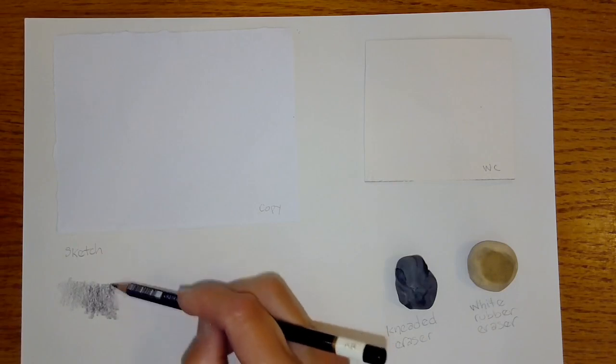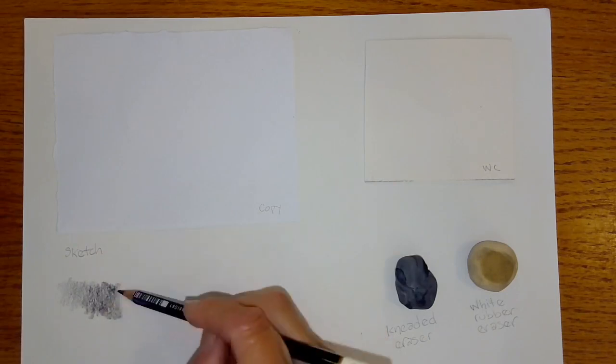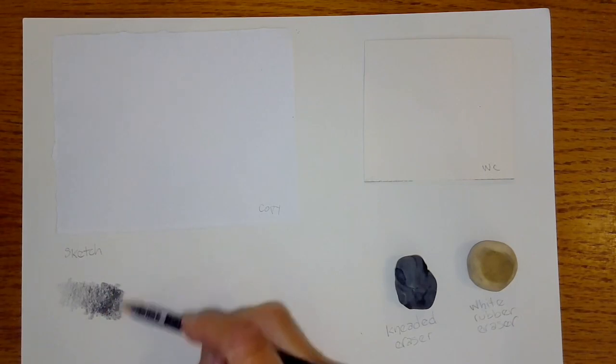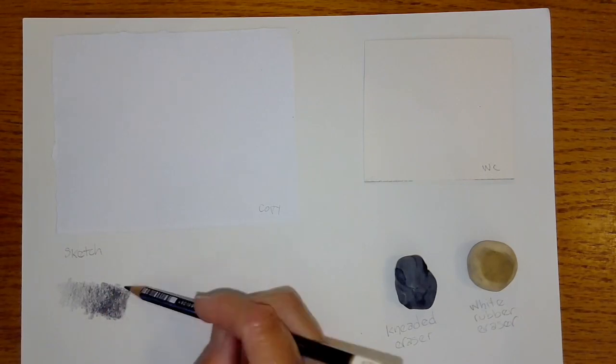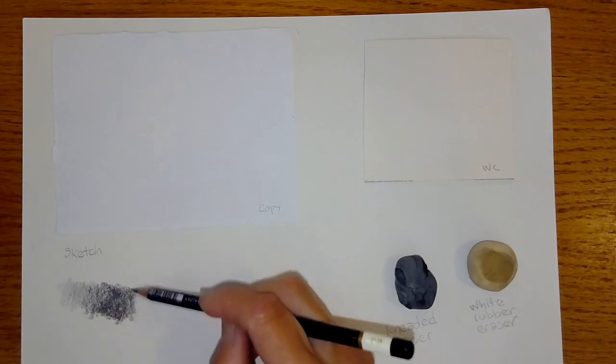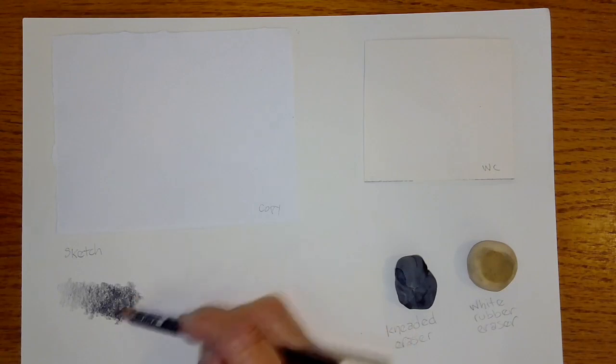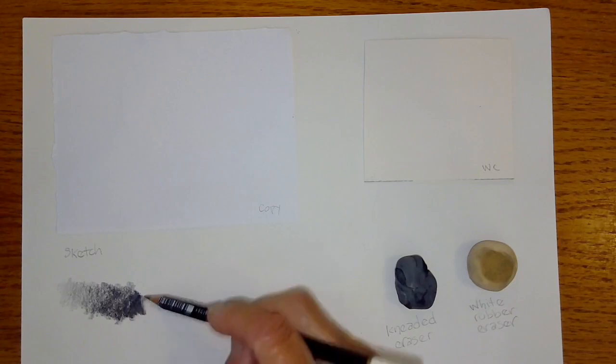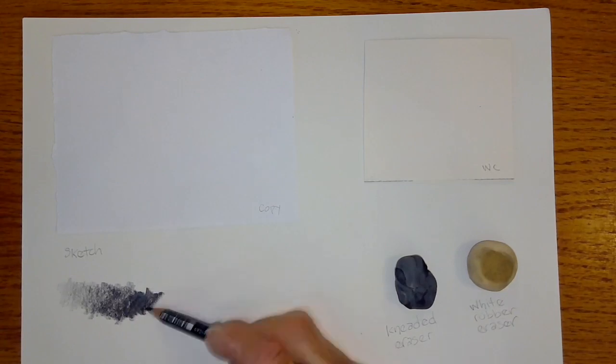This feels so nice, so much fun. Light pressure in the beginning, now I'm working into moderate pressure to gradually get the value a little darker, laying down more graphite on the page, and now I'm going to work into much more pressure to see just how dark I can get this.